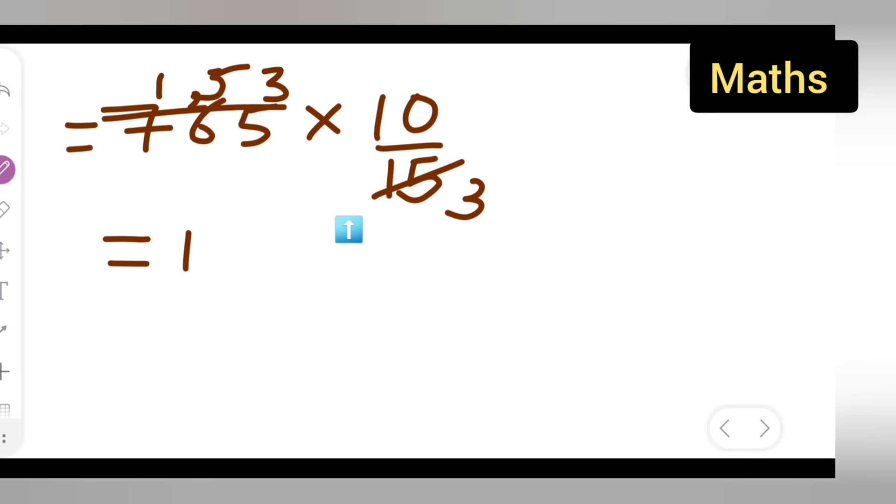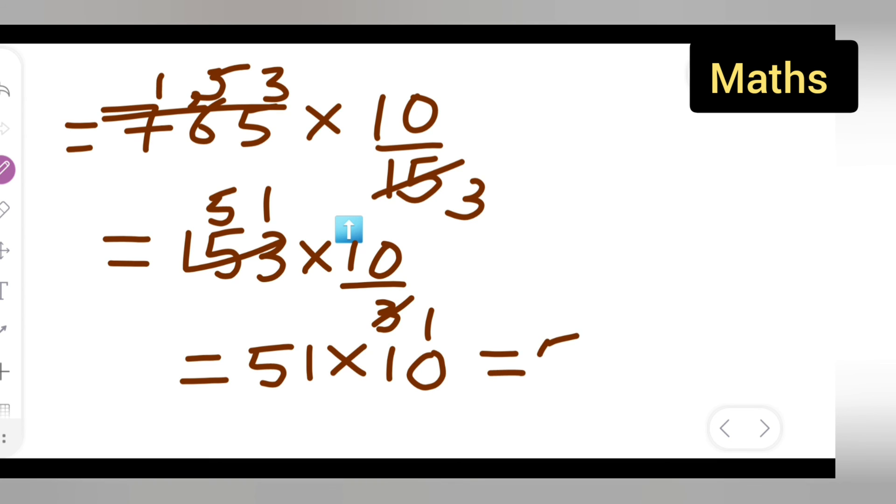So 153 multiplied by 10 upon 3. Now you can again cancel this. 3 into 3 is 1, 3 into 15 is 5. So 51 times 10, which equals 510.